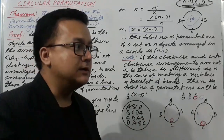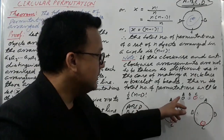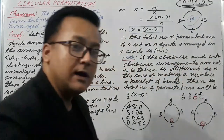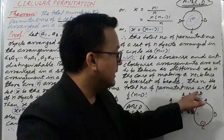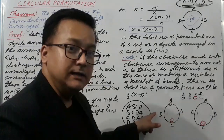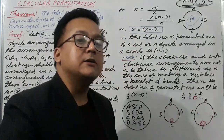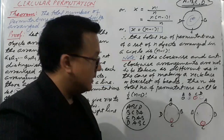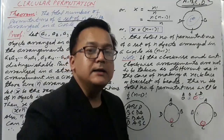I am going to take one example. I have taken A, B, C, D — four objects, represented by four different colored beads. The arrangement A, B, C, D going one way is your clockwise arrangement, and A, B, C, D going the other way is your anticlockwise arrangement. What is the difference between them? One is from the clockwise side and the other is from the anticlockwise side.